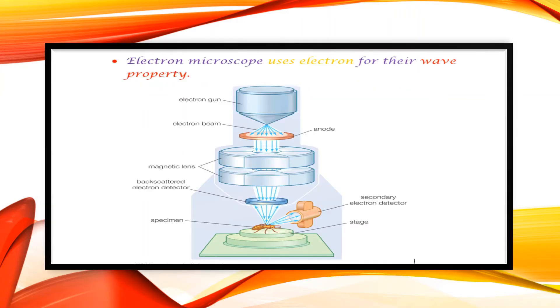An electron microscope is a microscope that uses a beam of accelerated electrons because of their wave property as a source of illumination. It was discovered by Ernst Ruska at Berlin University, who received the Nobel Prize in 1986.